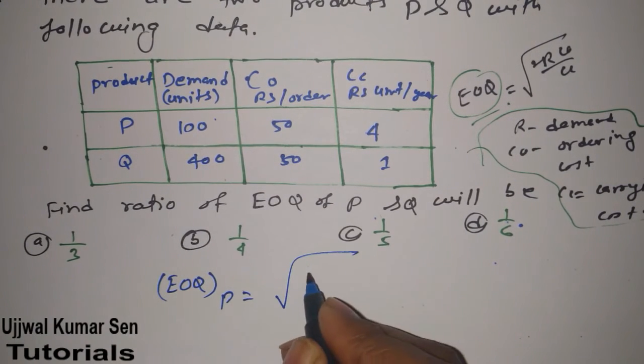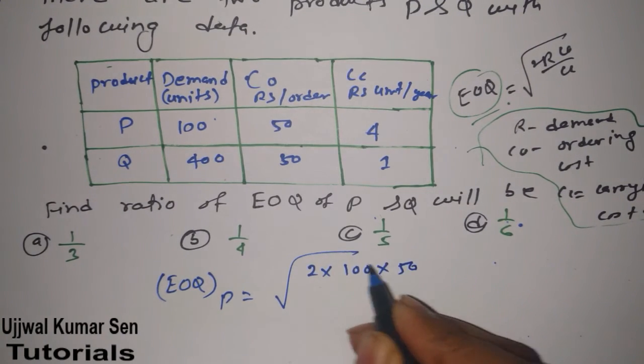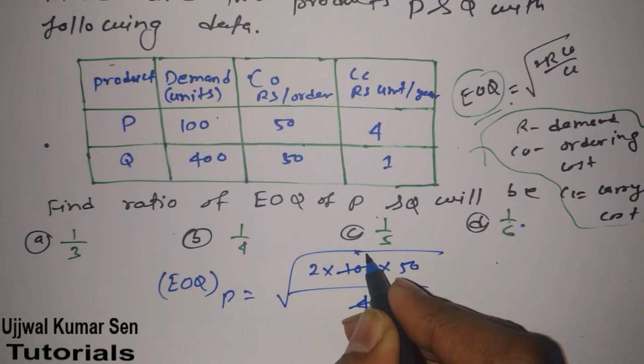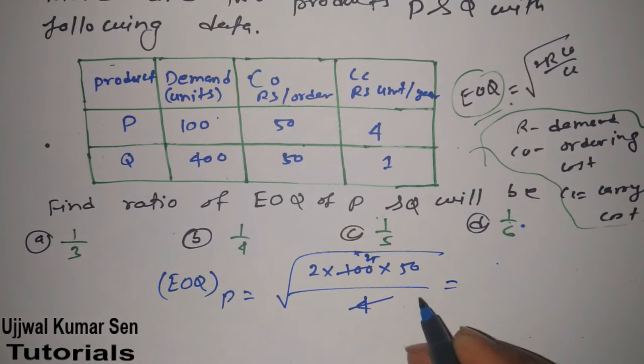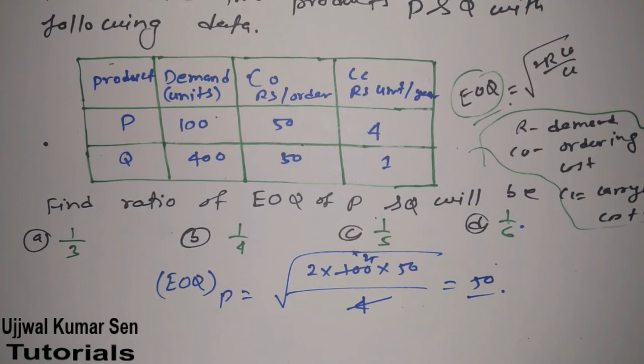Is equal to root under 2, R is 100, C naught is 50, and CC is 4. So 4, 25. Therefore, 25, 25 and 2, so 50. We will get 50 from here.